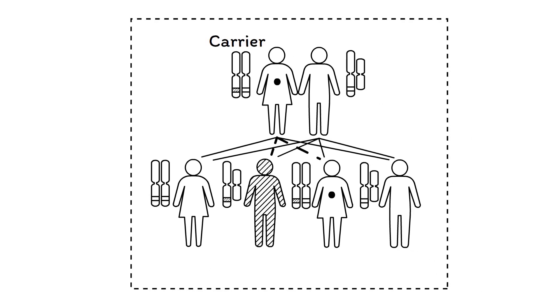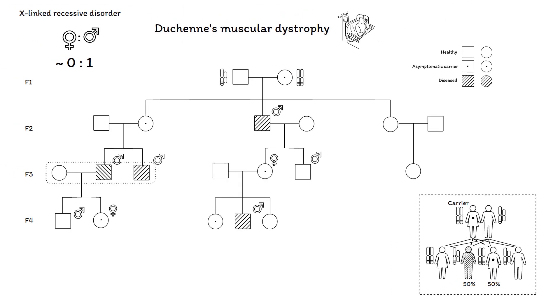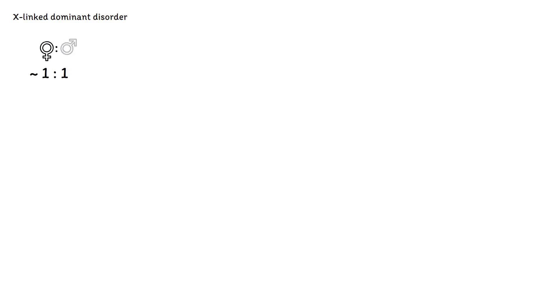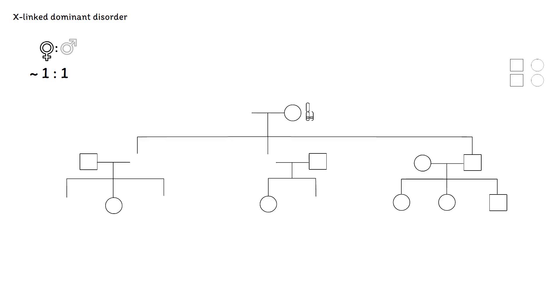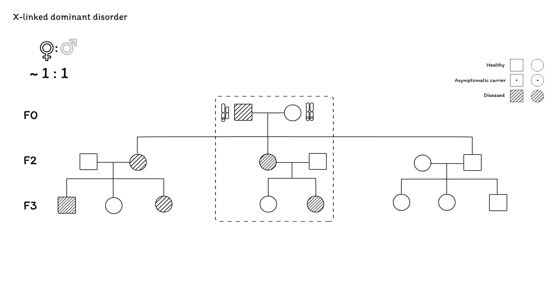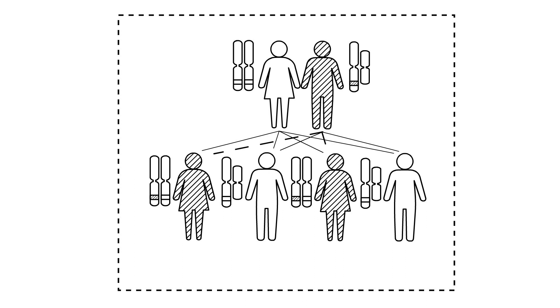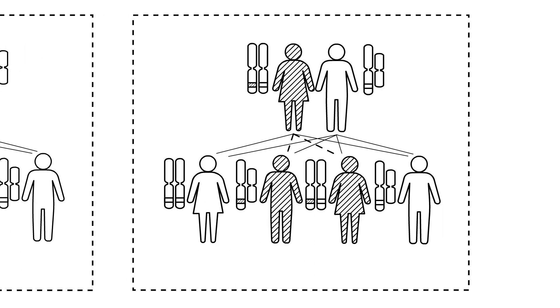A female carrier has a 50% chance to have an affected son or a daughter that is a carrier. In contrast, X-linked dominant disorders affect both males and females, though they are seen more often in females as a result of spontaneous miscarriages of male fetuses. A vertical pattern is therefore visible with affected persons in every generation. Affected males are guaranteed to pass the affected allele to their daughters, but have no affected sons. Affected females have a 50% chance that either a son or daughter will be affected.